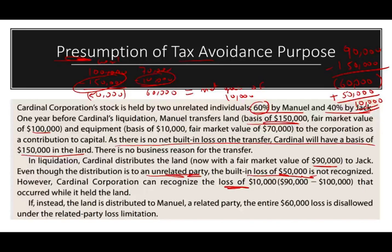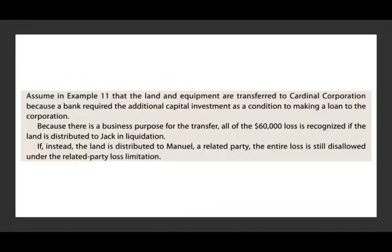Now instead, if we distribute it to Manuel — a related party because he owns 60% — we stop right there. None of the loss is allowed because he's a 60% owner. Now assume the land and equipment were transferred to Cardinal Corporation because a bank required the additional capital investment as a condition to make a loan to the corporation — now we have a business purpose for the transfer. In that situation, all of the $60,000 is recognized if the land is distributed to Jack in the liquidation, because Jack is the 40% owner and not a related party. If instead the land is distributed to Manuel, a related party, the entire loss is disallowed. So if there is a business purpose, we still have to distinguish between related party and non-related party.